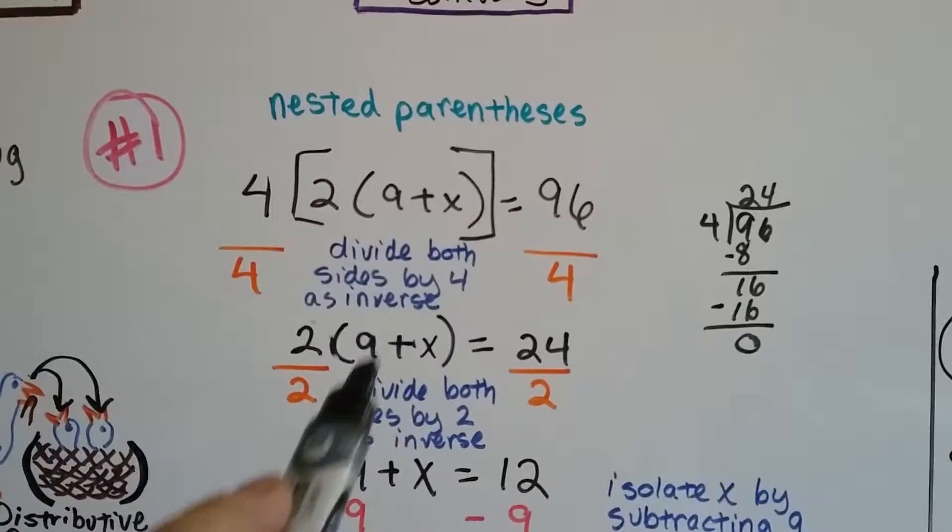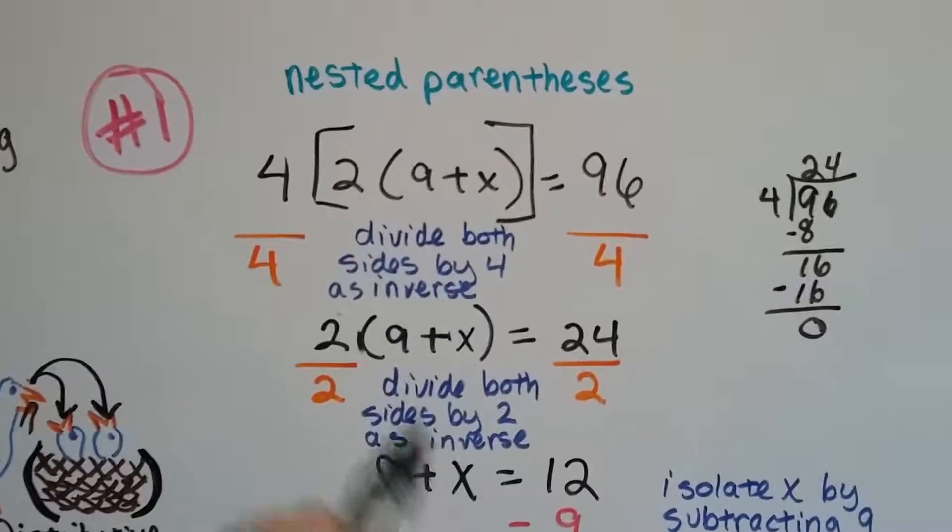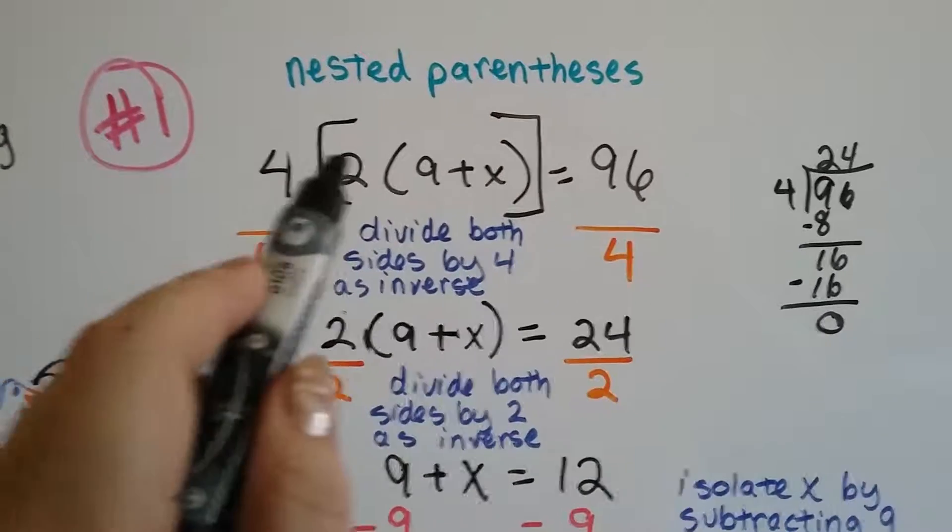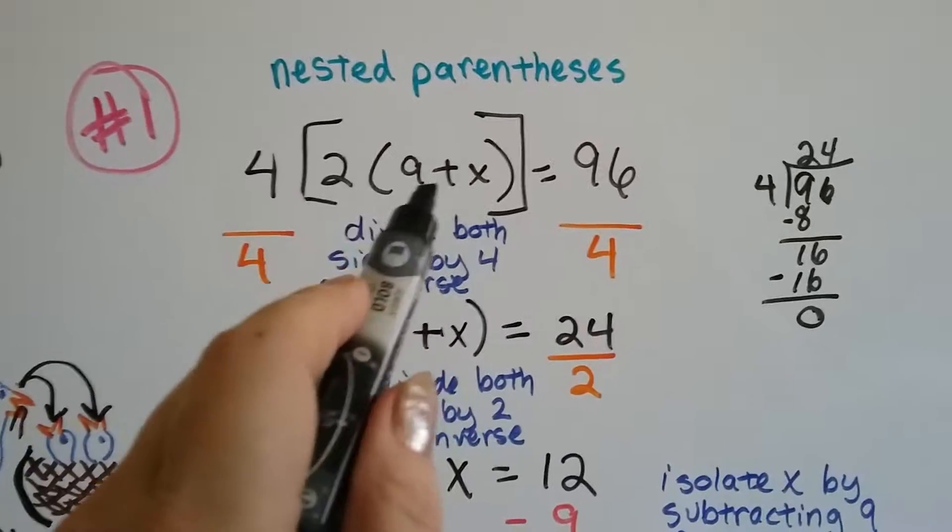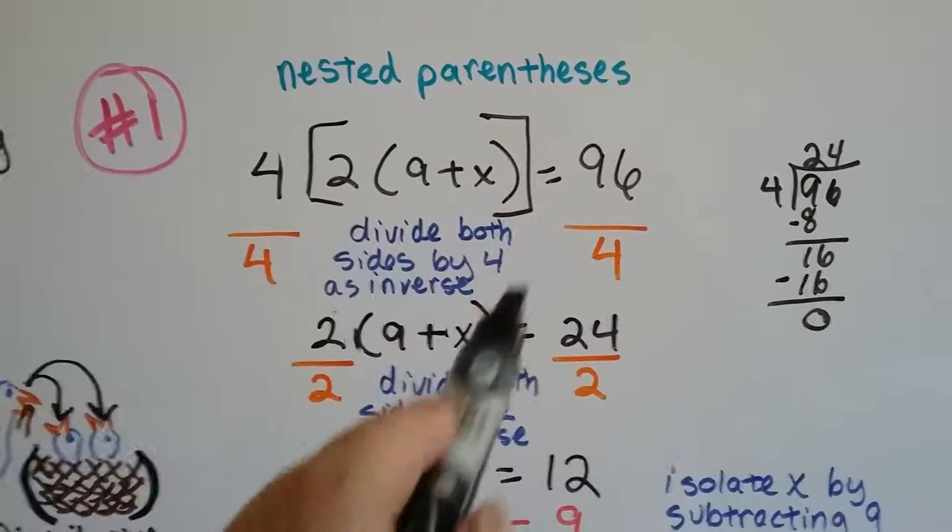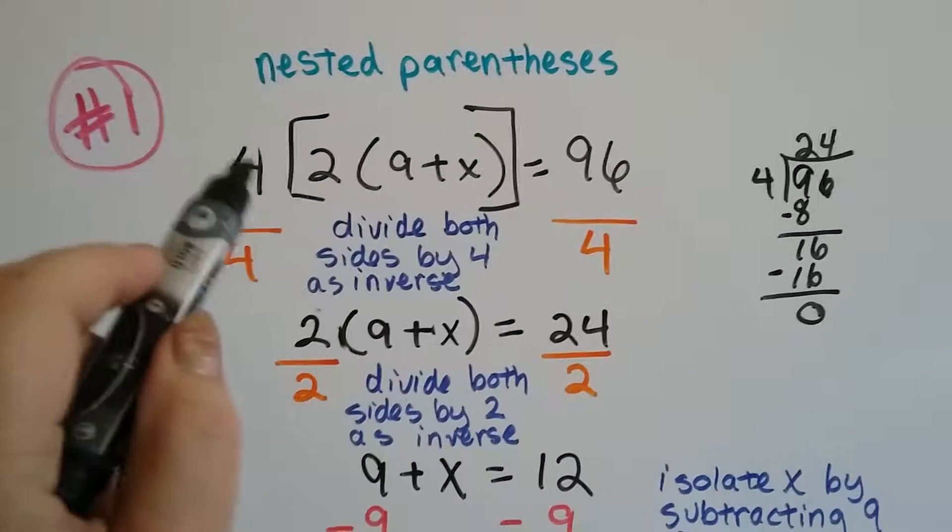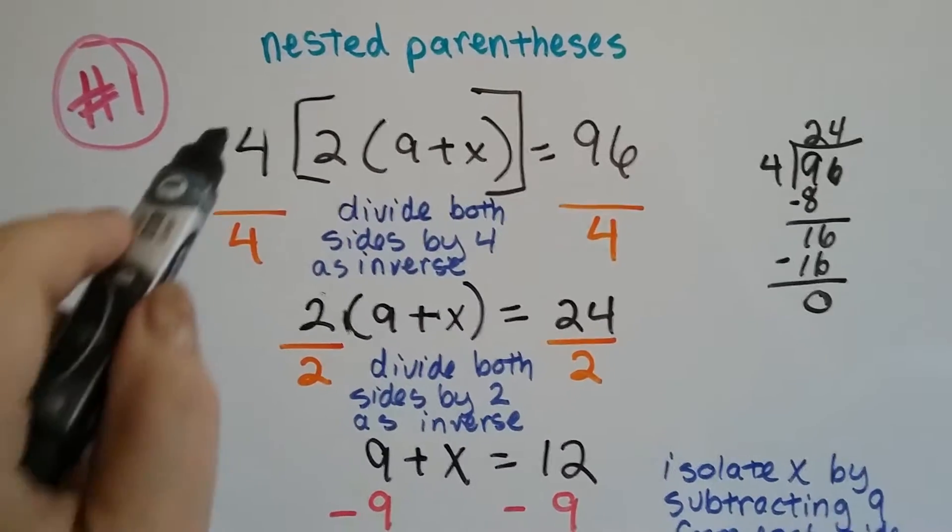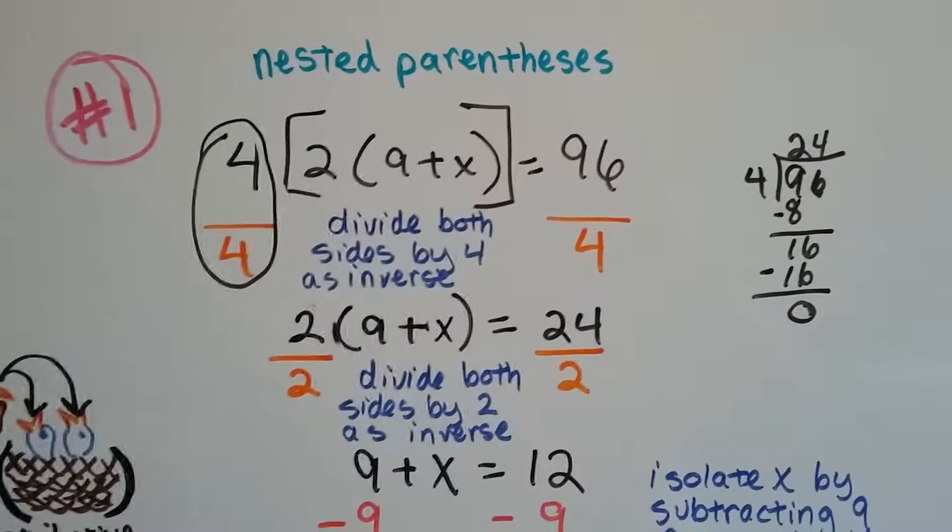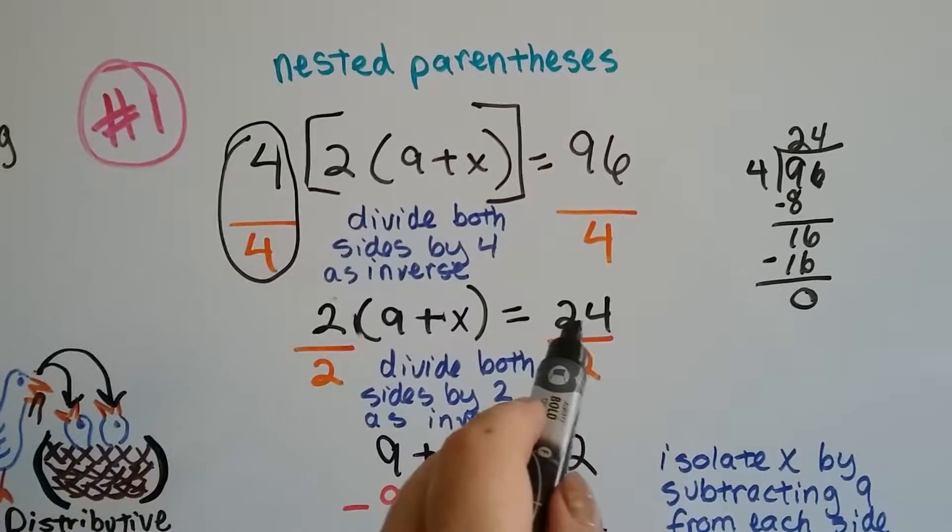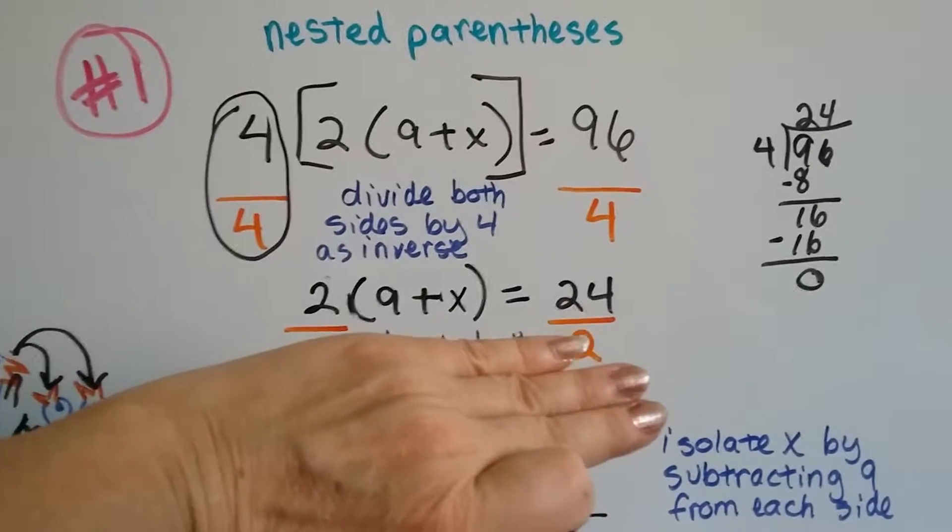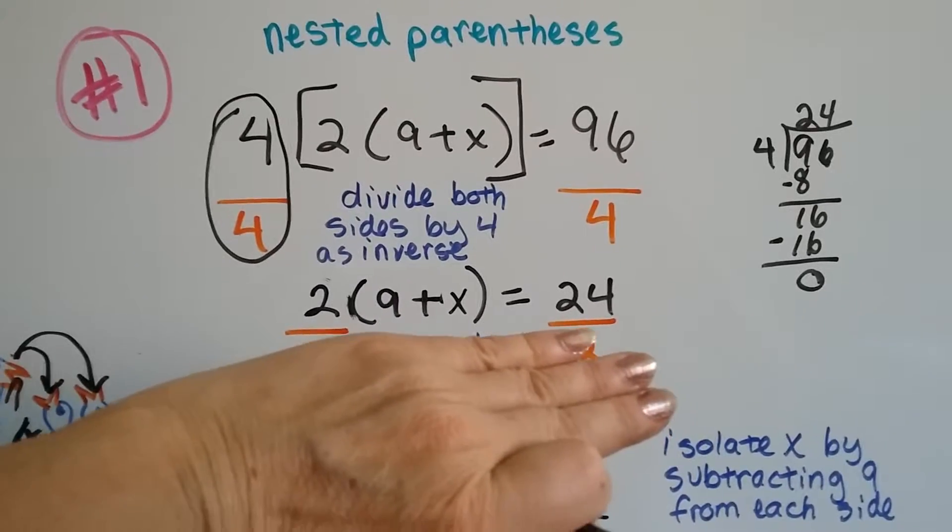The first way I'm going to show you how to solve it is by dividing both sides by the inverse operation. We know that this is 4 times what's ever inside the brackets. So we divide the 4 by 4 and the 96 by 4. That's going to get rid of this 4. 96 divided by 4 is 24. And now our equation says 2 times 9 plus X equals 24.